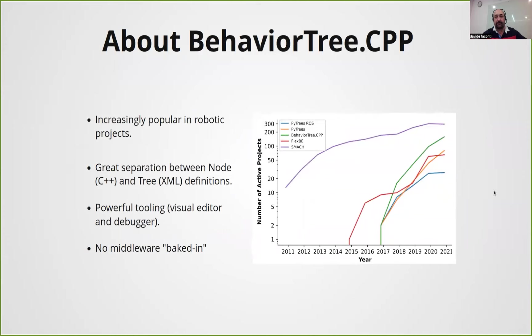This is independent data from a recent publication discussing how different libraries are adopted in the open source robotics community — data scraped from GitHub. You can see that BehaviorTree.CPP is getting a lot of adoption. There are other solutions using finite state machines that are still very strong, like SMACH, which was created more than a decade ago.